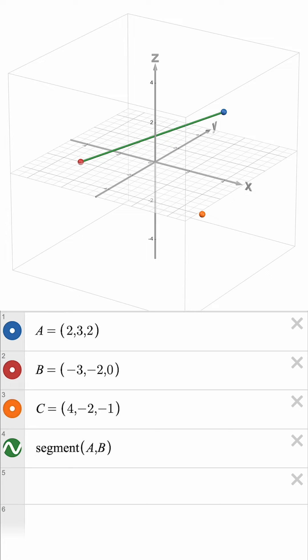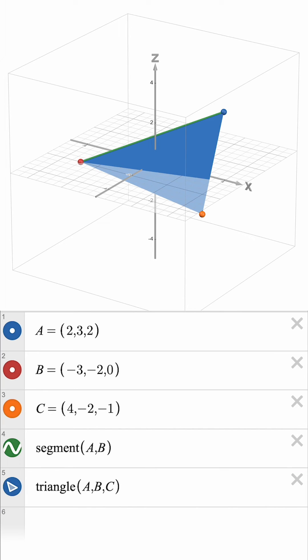Instead, we can connect any three points using a triangle. By typing the triangle command, we can use A, B, and C as inputs to visualize the surface connecting those points.